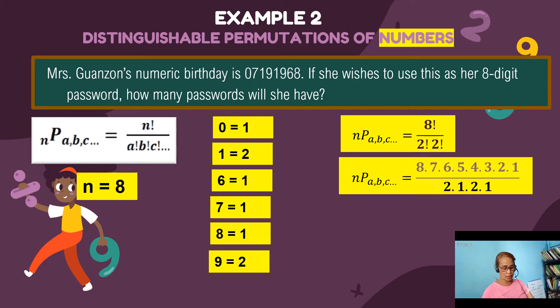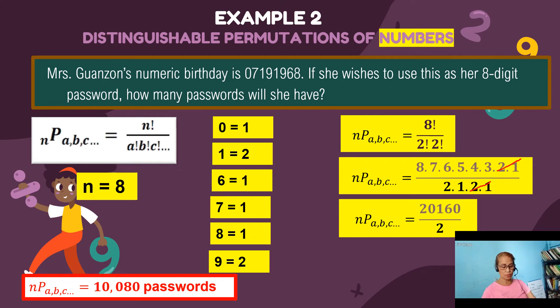the common factors two, one, and two, one. So what's left on the top part is eight times seven, six, five, four, three divided by two. So multiplying all of those on the top part, you get 20,160 divided by two, which is equal to 10,080 possible passwords.